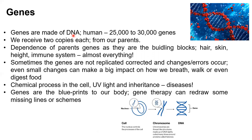Our parental genes determine our skin color, skin tone, hair color, height, immune system — almost everything we have comes from them. Sometimes these genes are not replicated correctly. When a cell multiplies, the whole genome has to multiply, and errors can occur. Even very small errors can have a big impact — they can change the way we breathe, the way we talk, or the way we digest food. These changes are known as mutations.